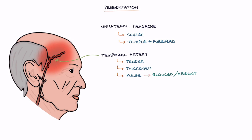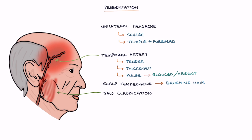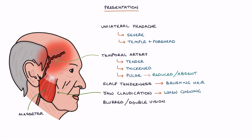Giant cell arteritis may be associated with scalp tenderness, which the patient may notice when brushing their hair or face. Jaw claudication — an aching pain in the muscles of the jaw when chewing, particularly the masseter muscle on the side of the jaw — as well as blurred or double vision and painless loss of vision if not treated in time.